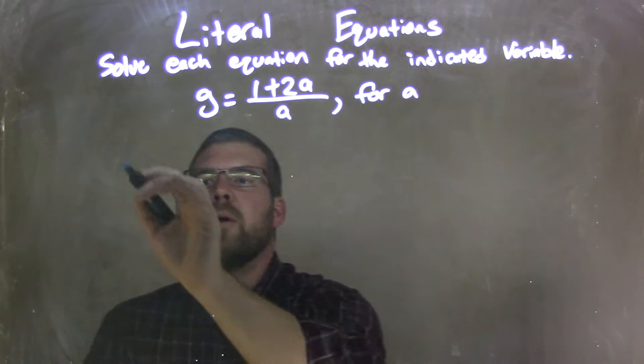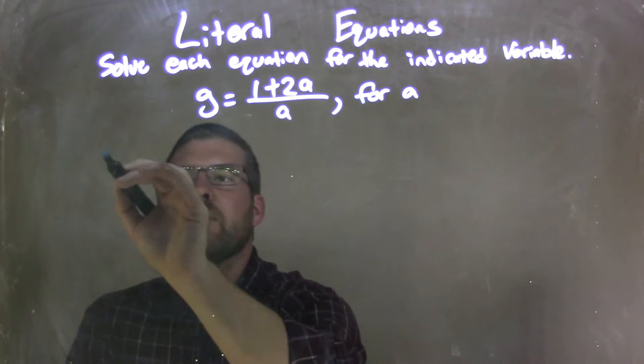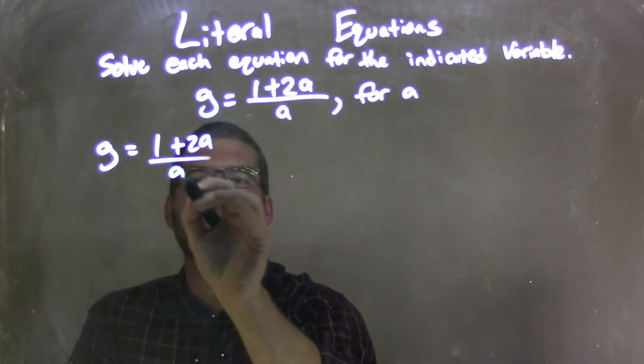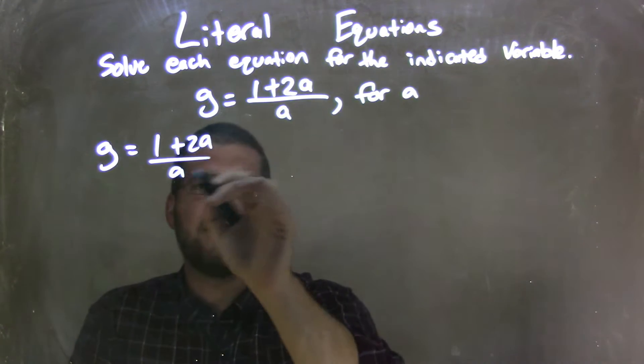Well, first I'm going to rewrite my equation here. I'm going to give myself a little space on the left in case it seems like it's been a little more complicated. So g equals 1 plus 2a over a. My first step here is I'm going to multiply both sides by a to get a out of that denominator.